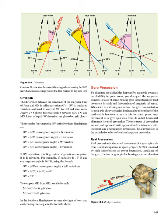Gravation. The difference between the directions of the magnetic lines of force and GN is called gravation (GV). GV is similar to variation and is used to convert MH to GH and vice versa. Figure 14a shows the relationship between GN, TN, and MN. Lines of equal GV, called isograves, are plotted on grid charts. The formulas for computing GV in the northern hemisphere are: GV equals W convergence angle plus W variation; GV equals W convergence angle minus E variation; GV equals E convergence angle plus W variation; GV equals E convergence angle minus E variation. If GV is positive, it is W gravation. If gravation is negative, it is E gravation.